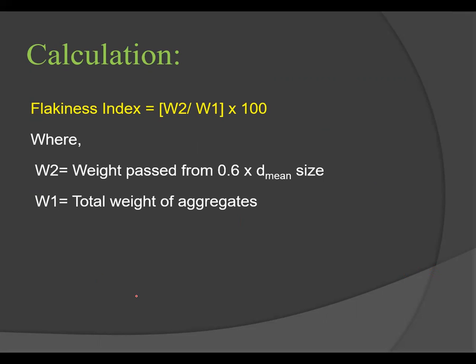The formula for Flakiness Index is: Flakiness Index = (W2 / W1) × 100. Here, W2 is the weight of particles passing through the 0.6 D mean size slot (the flaky material), and W1 is the total weight of the aggregate sample. This test is applicable only to aggregates with size larger than 6.3 mm.